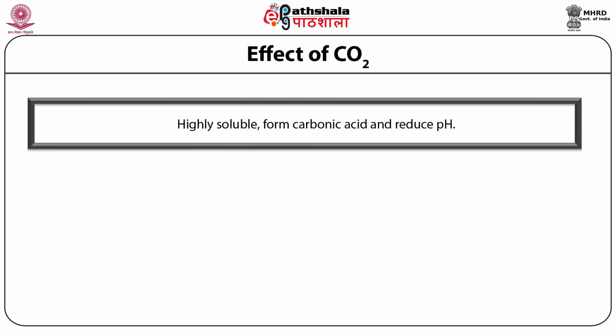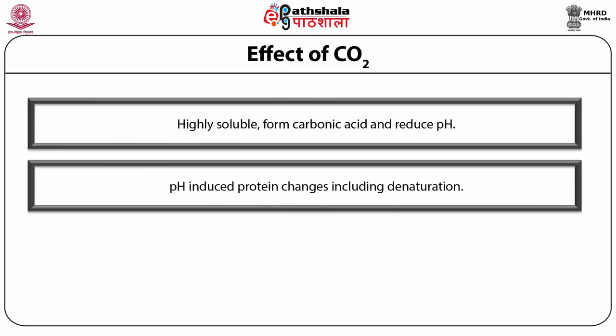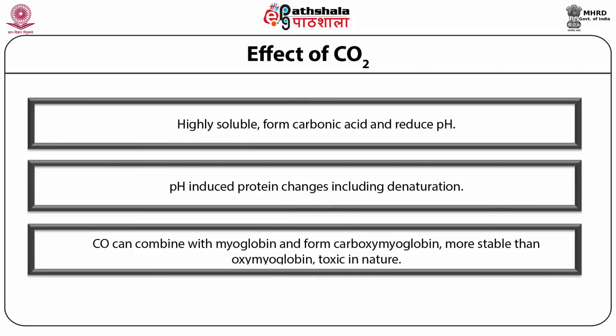Because of the high solubility of carbon dioxide and its reaction with water to form carbonic acid, there is a potential for some adverse effects on particular foods, likely due to the production of localized areas of low pH on or near the food surface. Carbon dioxide can combine with myoglobin to form bright red carboxymyoglobin, similar in color to oxymyoglobin. Carbon monoxide also retards fat oxidation and the formation of metmyoglobin, but currently carbon monoxide is not approved for use in MAP.